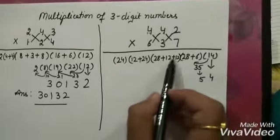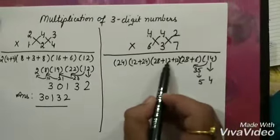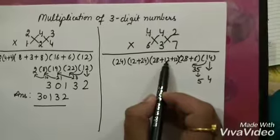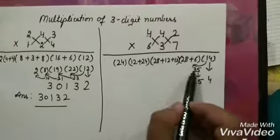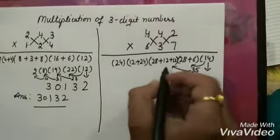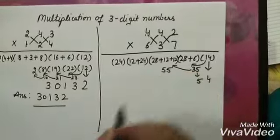Now 3 is left. Let us add all of them. 28 plus 12, 40. 40 plus 12, 52. 52 plus this 3, 52 plus 3, we get 55.